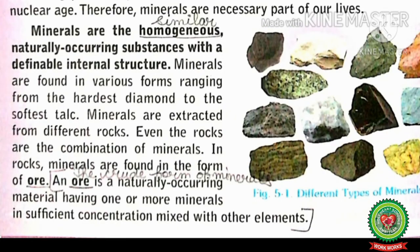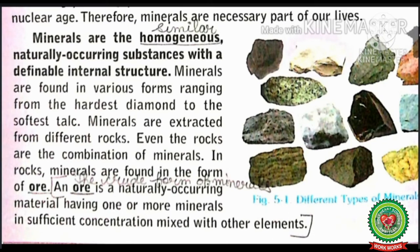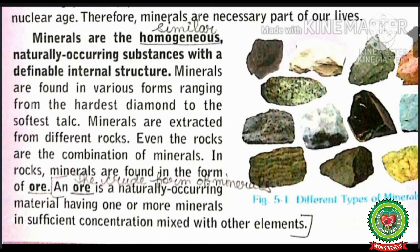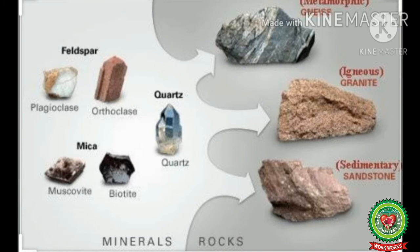Minerals are extracted from different rocks — even rocks are a combination of minerals. Minerals in rocks are found in the form of ore. Ore is a naturally occurring material having one or more minerals in sufficient — meaning enough — concentration mixed with other elements. So basically, we get minerals from different rocks, and these minerals are found in rocks in the form of ore.